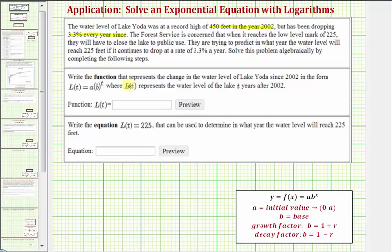We first want to write the function that represents the change in the water level of Lake Yoda since 2002 in the form L(t) = a times b raised to the power of t, where L(t) represents the water level of the lake t years after 2002. We'll notice in 2002 the water level was at 450 feet and therefore the initial value, which is a in our exponential function, is equal to 450.